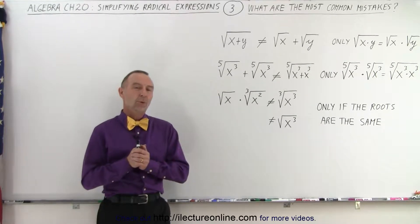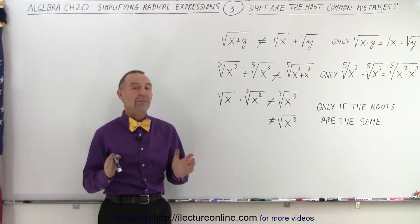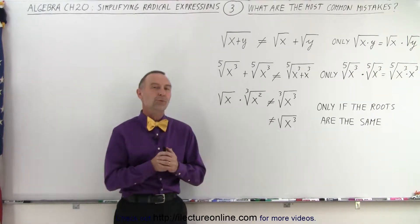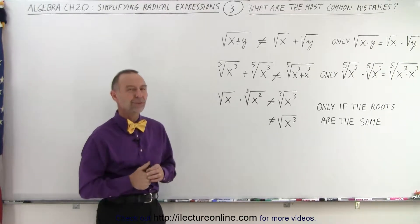Welcome to Electronline. What are some of the big mistakes we can make when we're trying to simplify radicals? Here are the three big ones. What are they?